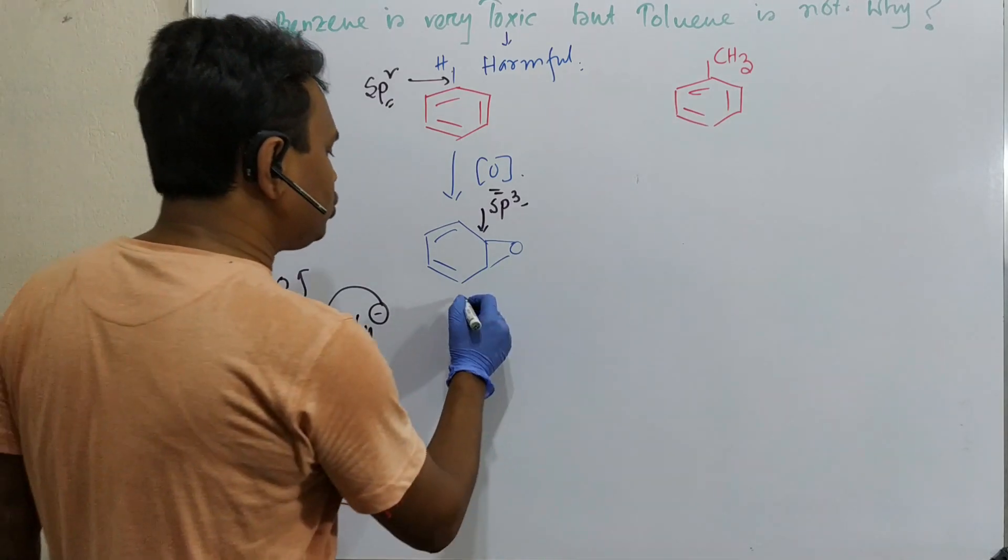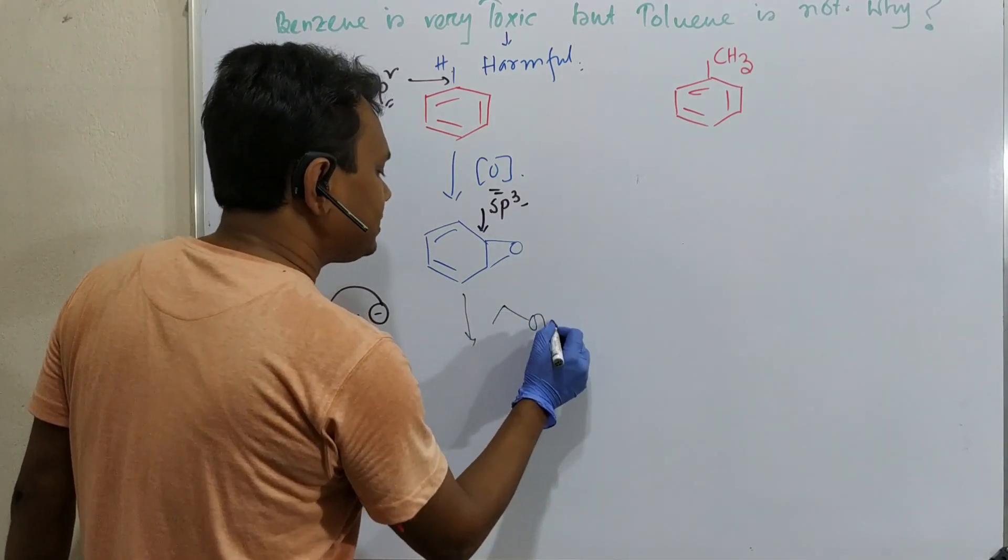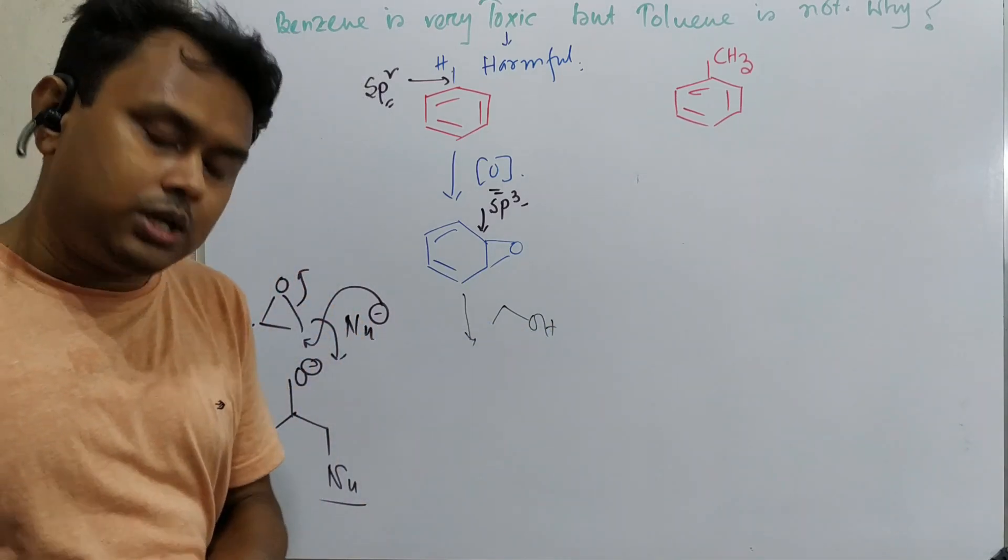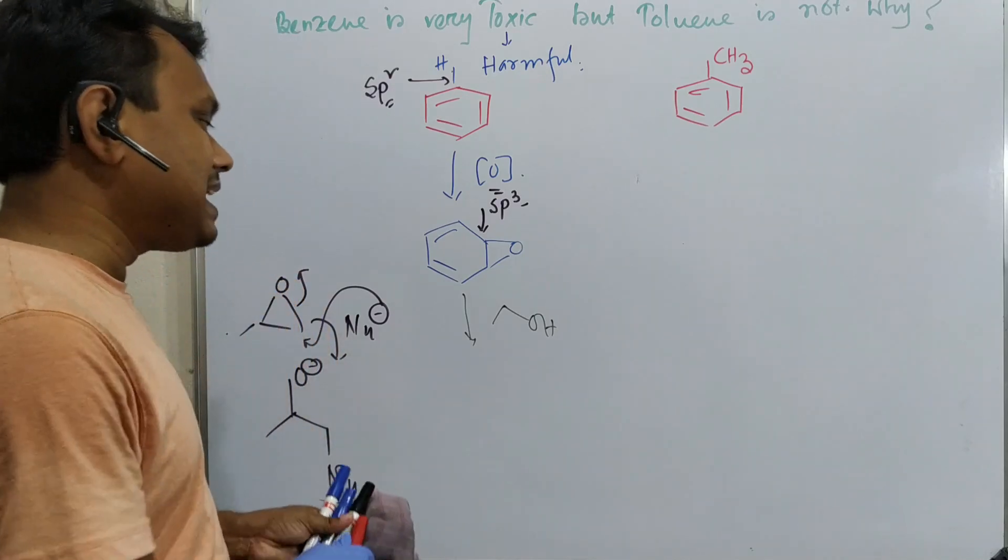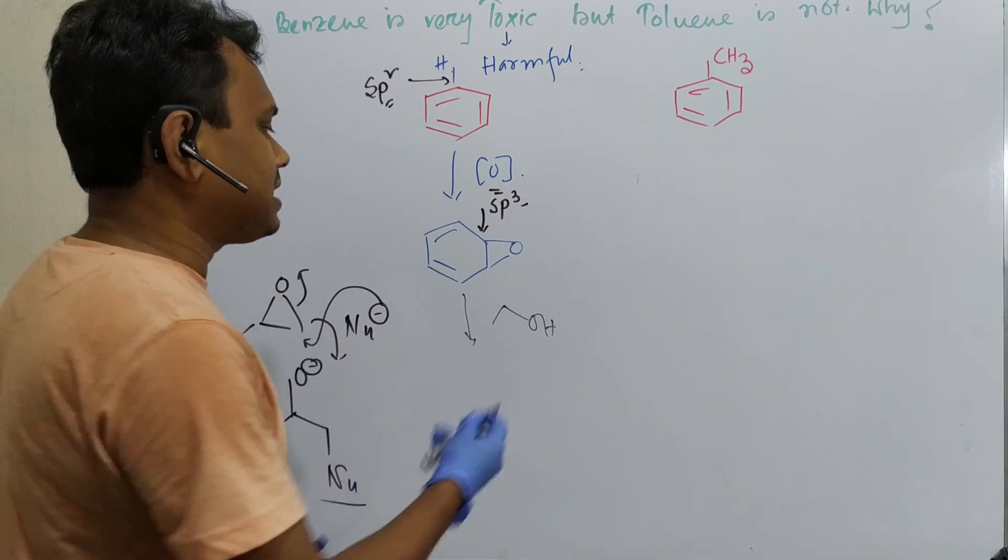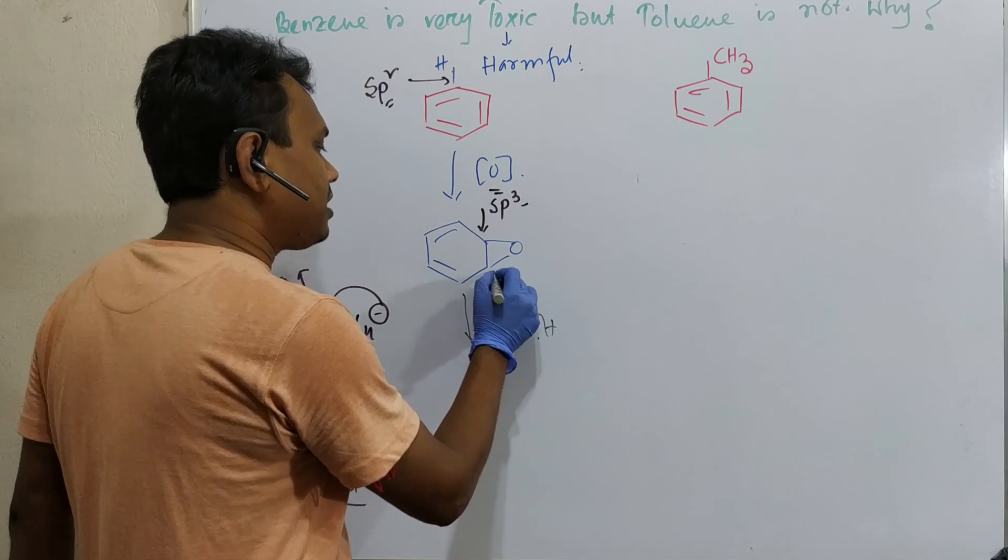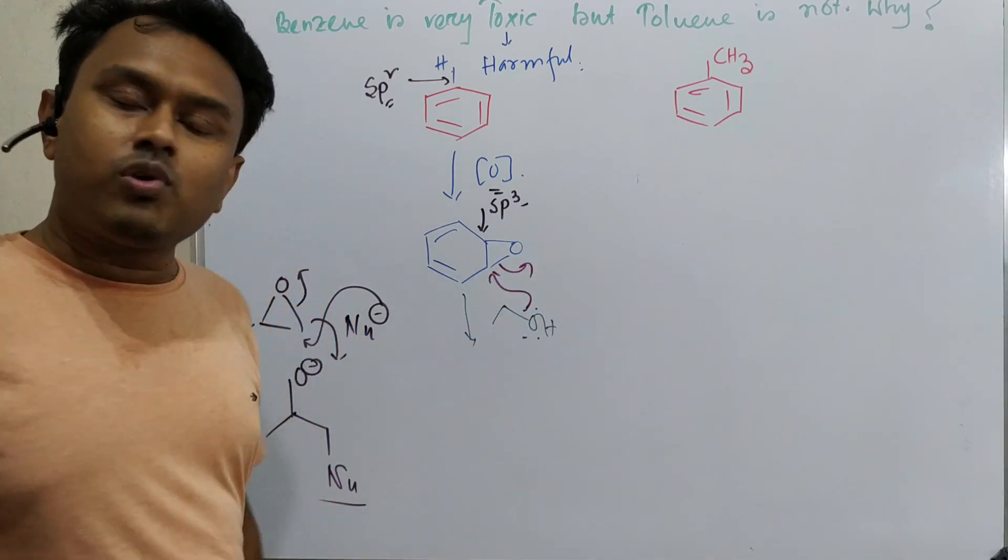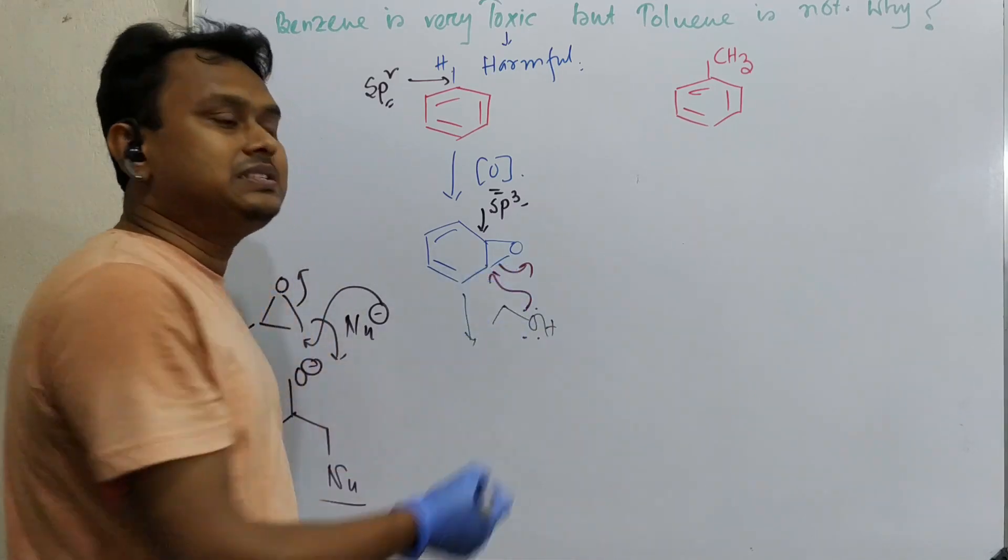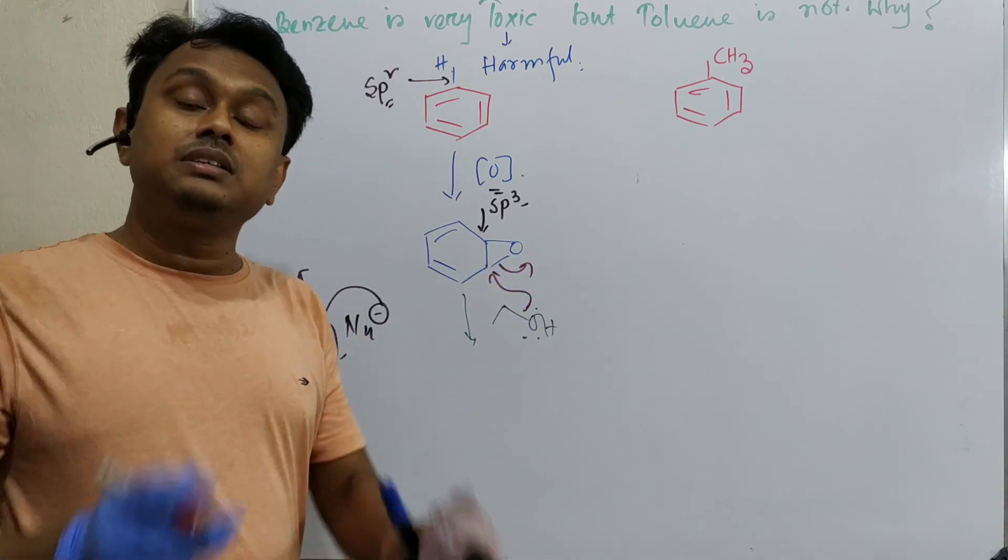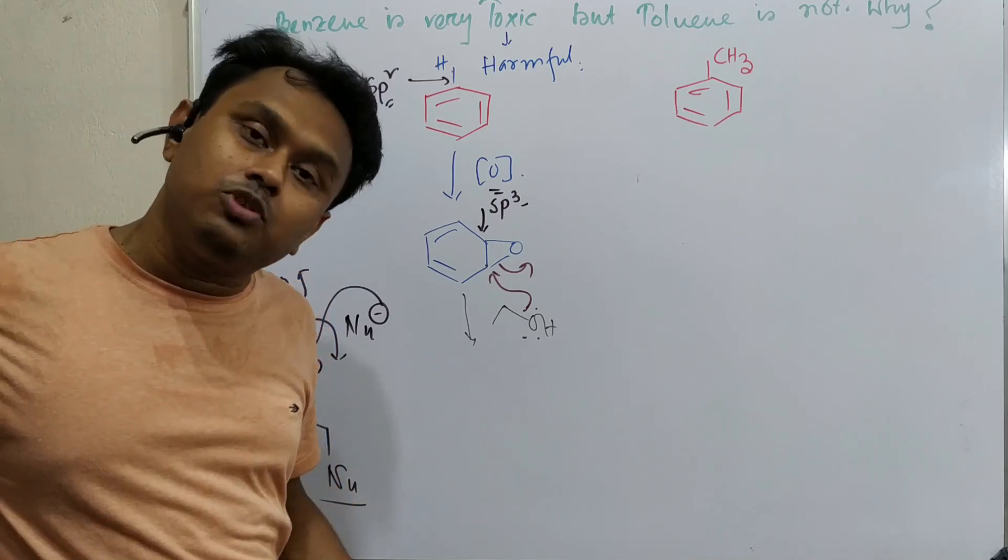Now what happens in our enzymes? There are many nucleophilic groups. For example, you can see serine derivatives. Protein is amino acid polymer, so there is an amino acid named serine. It can undergo the same reaction and open up the ring. In this way, the enzyme will permanently bind to this ring, which means it is damage of the enzyme.